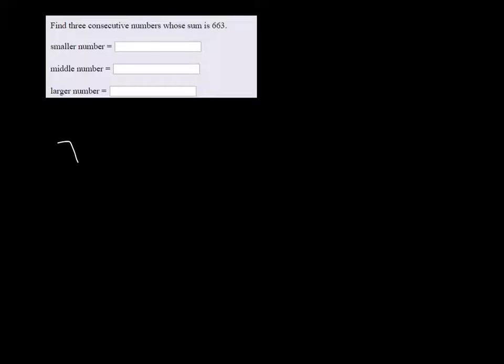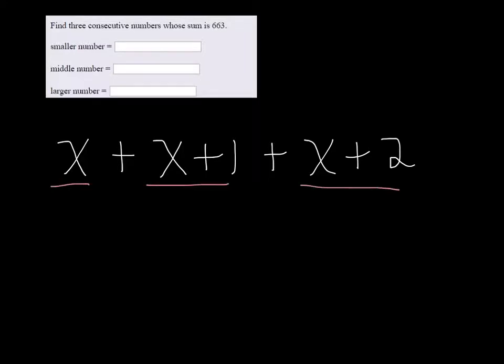So the smaller number we're going to let be x. The next number that comes after it would be x plus 1, and then the number that would come after that would be x plus 2. So these are our three consecutive numbers, and they're going to equal 663.